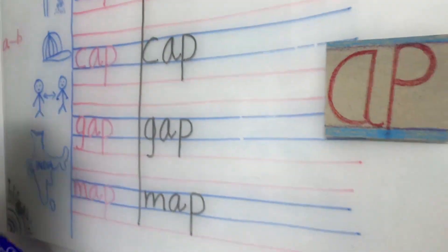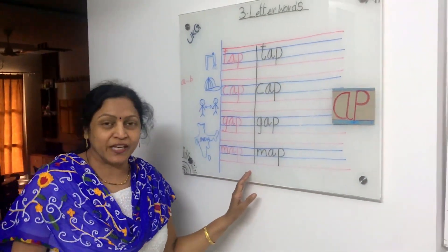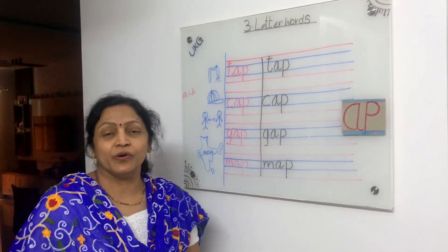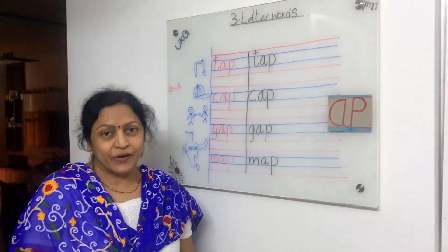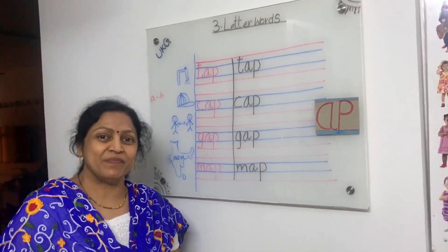Now, children, you write these words in your notebooks three times. And one more thing, children. You have drawing book. In that drawing book, you color the second page. Okay, children? Bye bye.